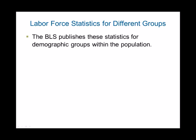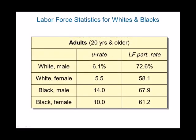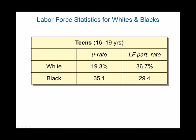The BLS not only looks at total labor force statistics — they disaggregate by different groups, states, and cities, revealing very different labor market experiences. For adults 20 and older, a white male has an unemployment rate of 6.1% and a labor force participation rate of 72%. An African-American female has an unemployment rate of 10% and participation rate of 61%. For teens aged 16 to 19, the unemployment rate is much higher and participation rate is much lower, since most are full-time students.